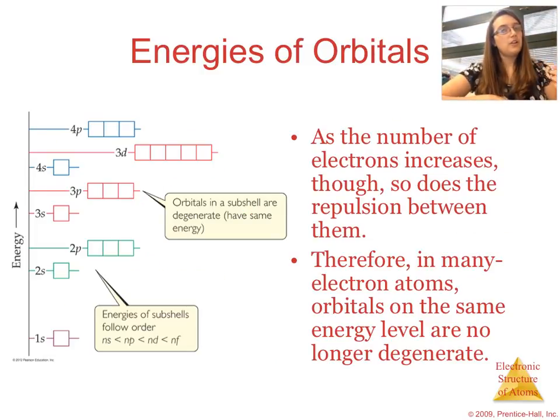So the energy levels in a hydrogen atom are degenerate. But as the number of electrons increase, we also have the repulsion between them increasing. So in many multi-electron atoms, orbitals on the same energy level are no longer degenerate. So what this means is 2s is lower energy than 2p, or 3s is lower than 3p, which is lower than 3d. So no longer are each of the shells degenerate. But now there's actually a distinction between energy levels.